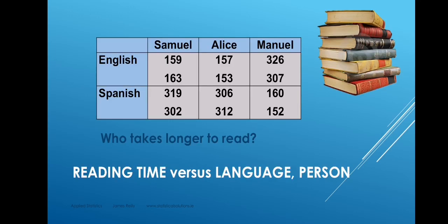We now move on to a two-factor experiment where we also include replication in the cells — a full two-factor experiment. This experiment explores the effect on reading time, which is the response, of the two factors language and person. The experiment consists of different people reading a page from a novel in different languages. We have two levels of language, English and Spanish, represented by the rows of the table, and three levels of person — Samuel, Alice, and Manuel — represented by the columns.